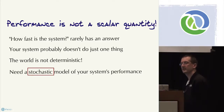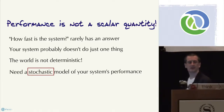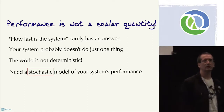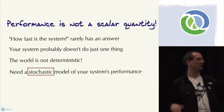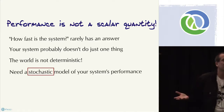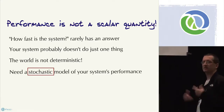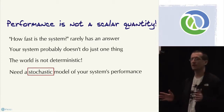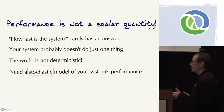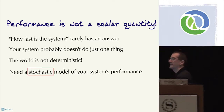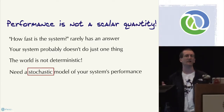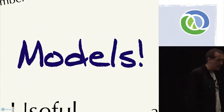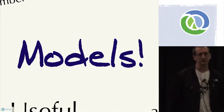The world is not deterministic — it's stochastic. Stochastic means involving randomness. There are all sorts of things that can happen, and we need to characterize the system in a stochastic mindset. We need to have a stochastic model of the system's performance. Models — like I said, you have a model for your system even if you do it haphazardly.